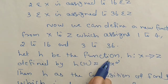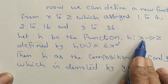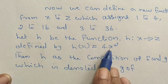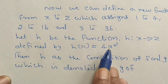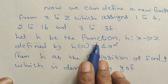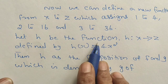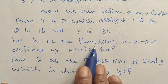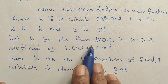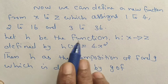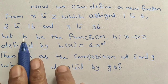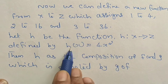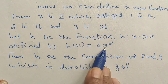Let h be the function defined from x to z, defined by h of x equal to x squared. We can define the function of h from x to z, where the function of x to z gives us x squared.